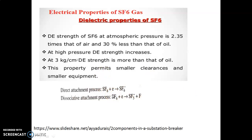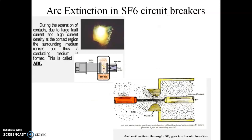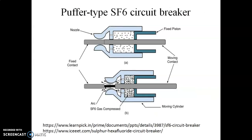SF6 circuit breakers have different types: non-puffer type, single pressure puffer type, and double pressure puffer type.